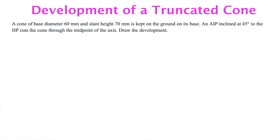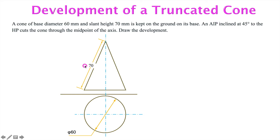After development of the cylinder, we will try to draw a truncated cone. Again, the base diameter and the height of the cone are given. And auxiliary plane — we know that this AIP (auxiliary inclined plane) is inclined 45 degrees to the AISP, and definitely perpendicular to VP. Then cut it. So initially, before cutting, this is the cone — its front view and top view.